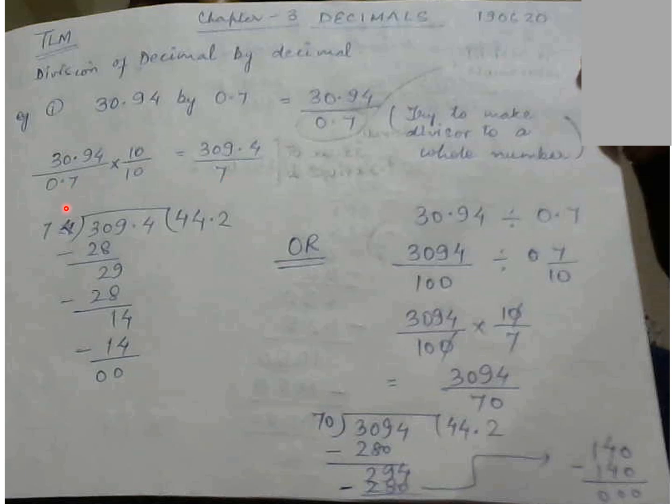So now when you are multiplying 0.7 with 10 to make it equal in fraction, you will multiply 30.94 also with 10.